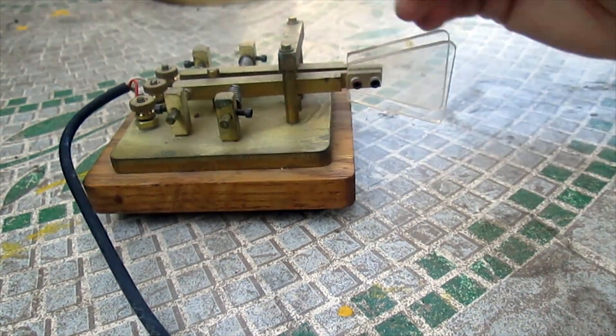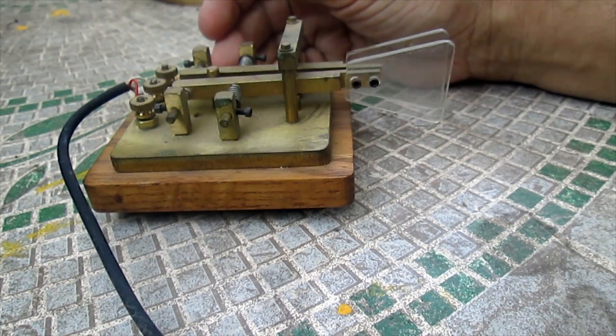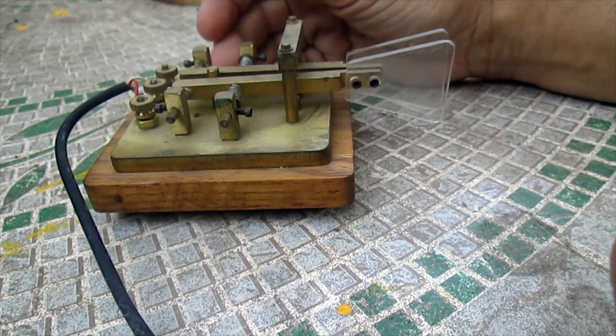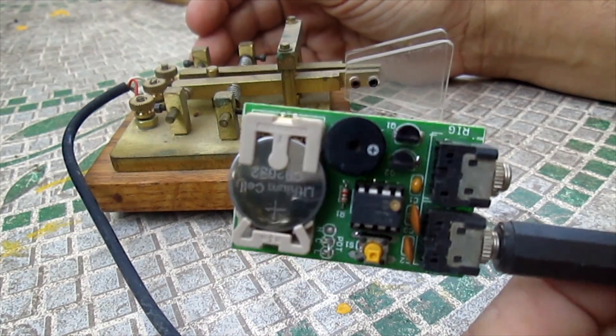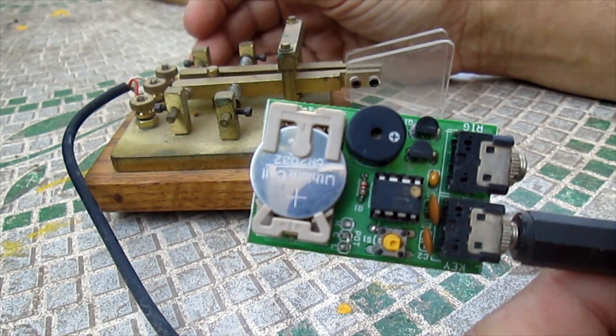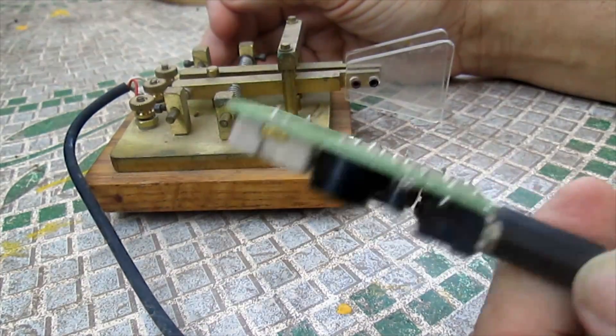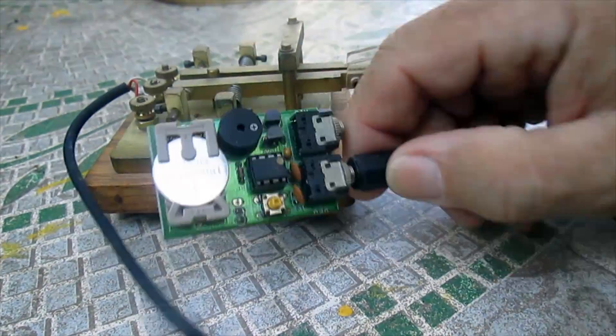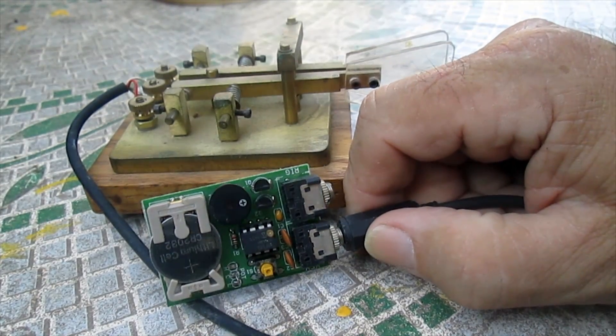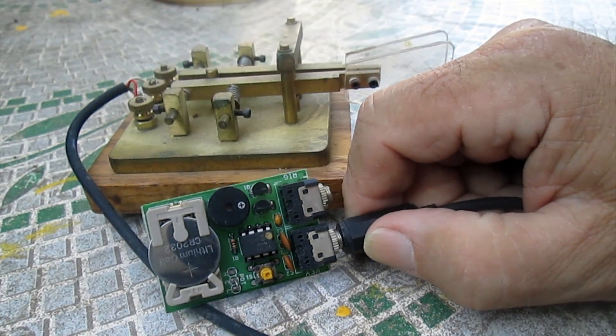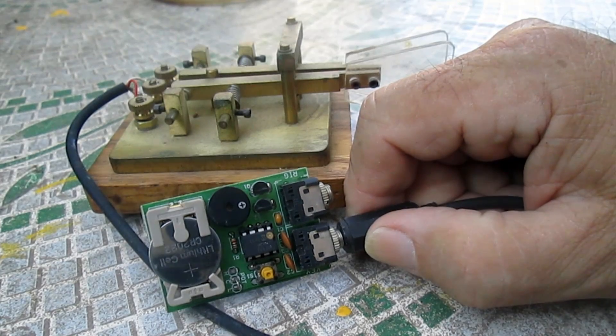You can see having this form the perfect dits and dahs would be an advantage for you to make it more legible by someone else, whether they're using their ear or whether they're actually using a computer to decode it. You can send Morse code by computer and decode it by computer.